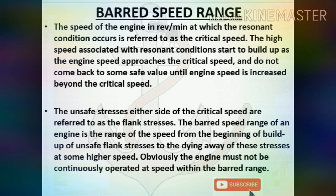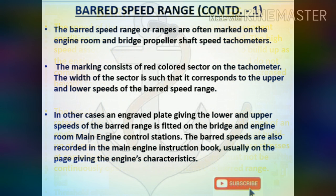Barred speed range: the engine speed in RPM at which the resonant condition occurs is referred to as the critical speed. High stresses associated with resonant conditions build up as engine speed approaches the critical speed and do not return to safe values until engine speed is increased beyond the critical speed. The unsafe stresses either side of the critical speed are referred to as flank stresses. The barred speed range is the range of speed from the beginning of build-up of unsafe flank stresses to the dying away of these stresses at higher speed. The engine must not be continuously operated within the barred range. Barred speed ranges are marked on engine room and bridge tachometers with a red-colored sector, or by an engraved plate giving upper and lower speeds, and are recorded in the main engine instruction book.